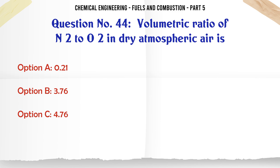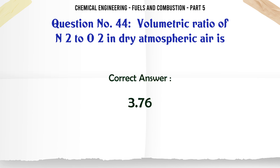Volumetric ratio of N₂ to O₂ in dry atmospheric air is: A. 0.21. B. 3.76. C. 4.76. D. 0.79. The correct answer is 3.76.